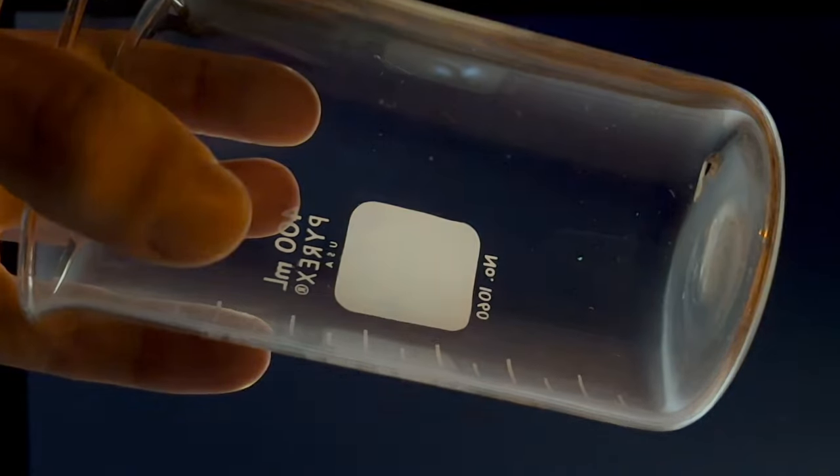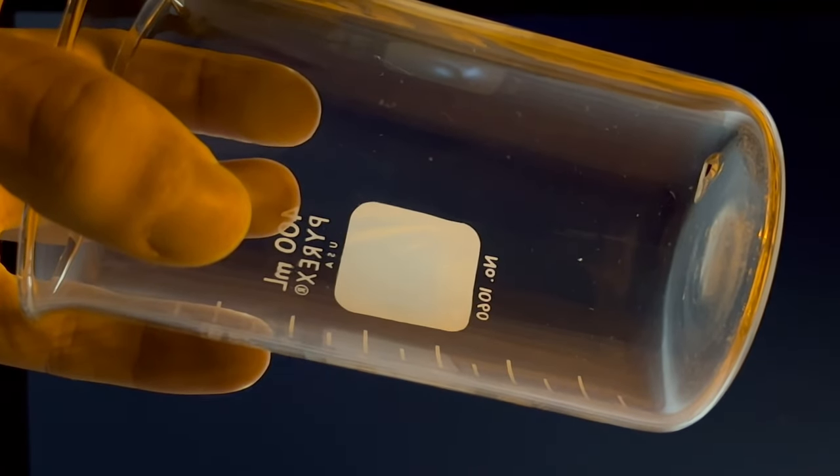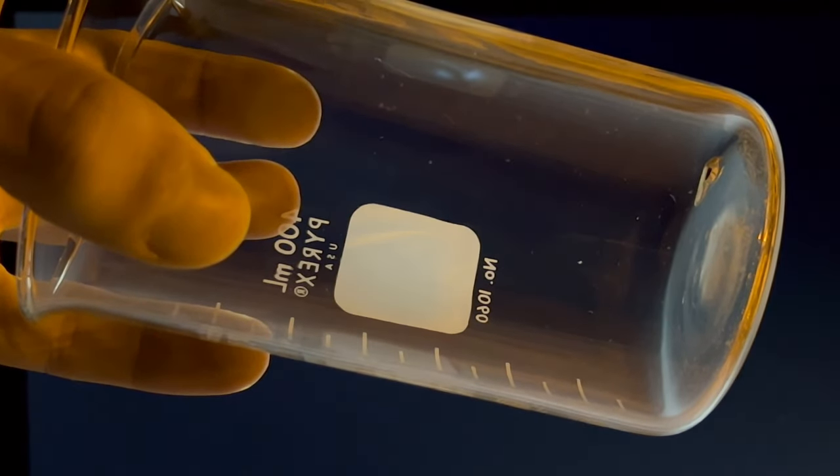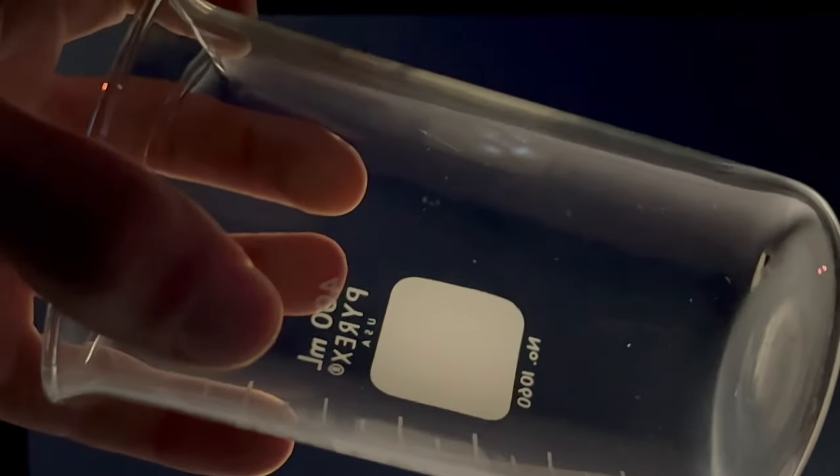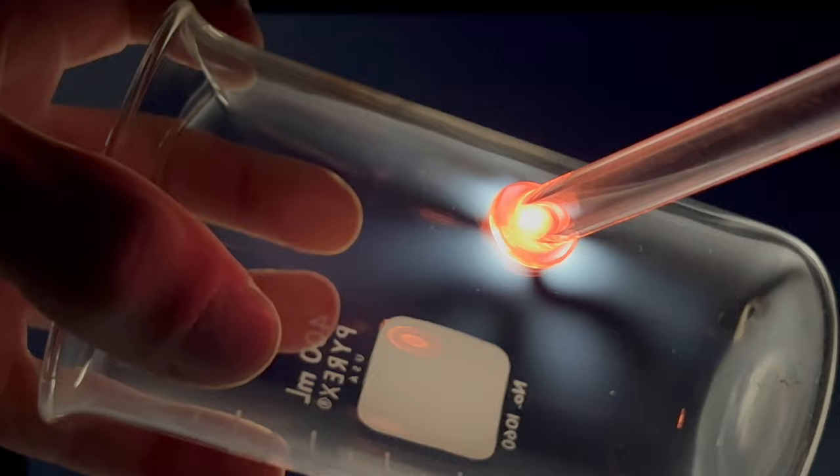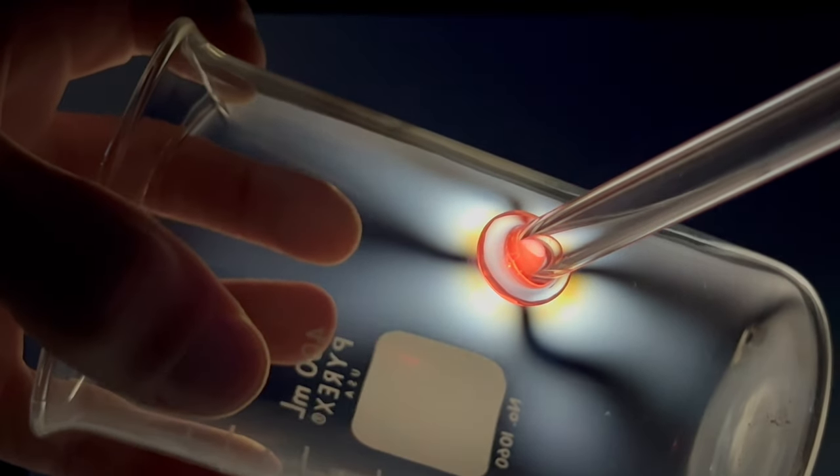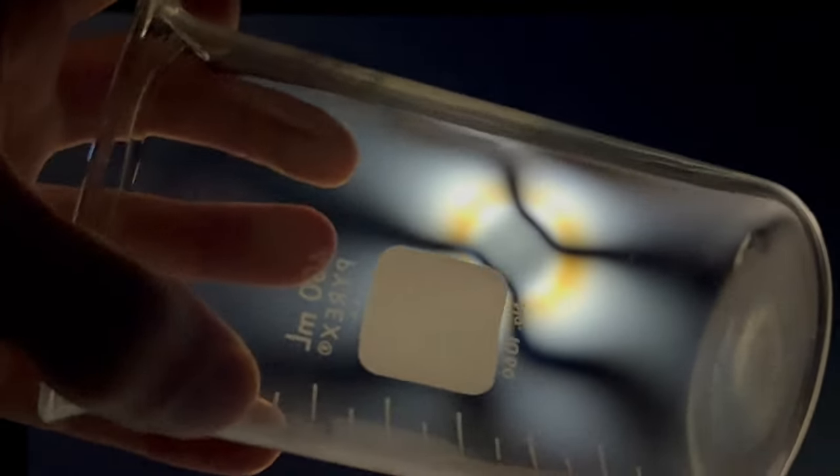Another example of visualizing stress in the same way is we can heat up a rod of glass and then touch it onto a beaker. This way we can see the stress grow a little bit in an interesting way. We see the stress grows out from the point of contact throughout the glass.